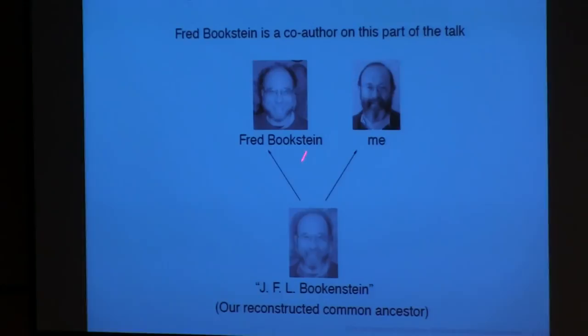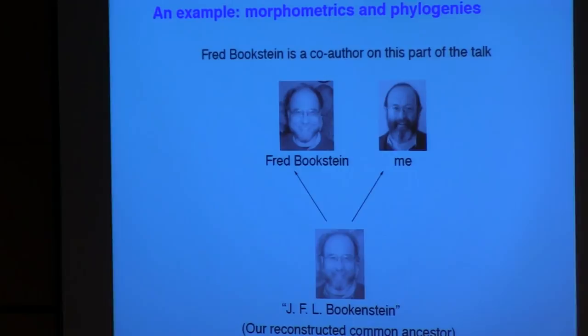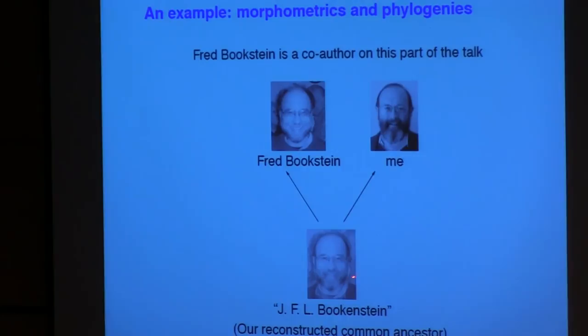One of them will be on morphometrics, on measurements of actual geometric form of organisms. The work I'm doing on that is together with Fred Bookstein, who is a very famous guy working in morphometrics. Fred is now at my university, at the University of Washington. And he and I have been working on a project together, and we figure we have a common ancestor. Even though he pronounces his name Steen and I pronounce my name Stein, we do have a common ancestor.